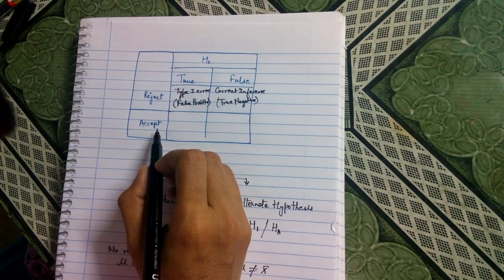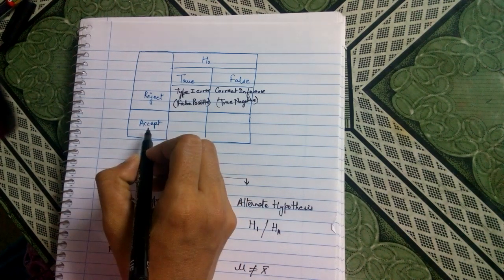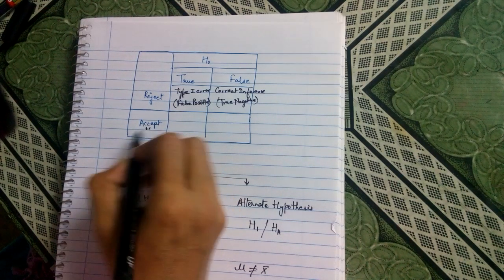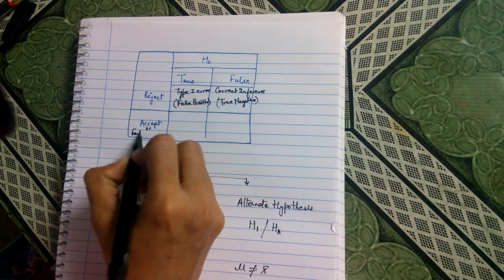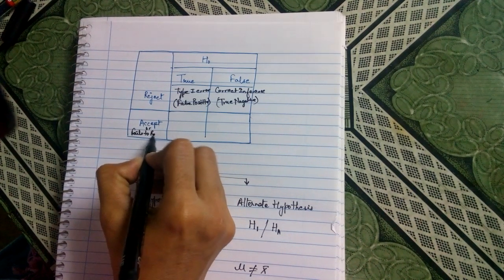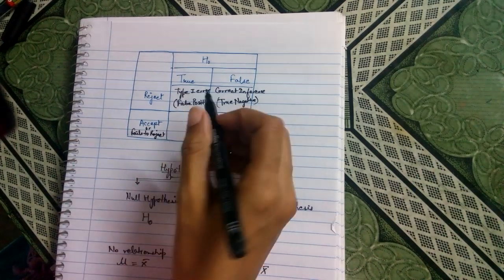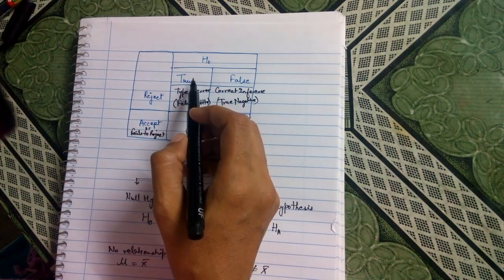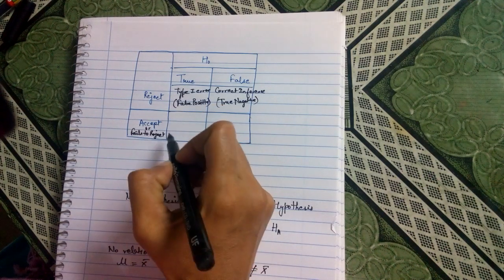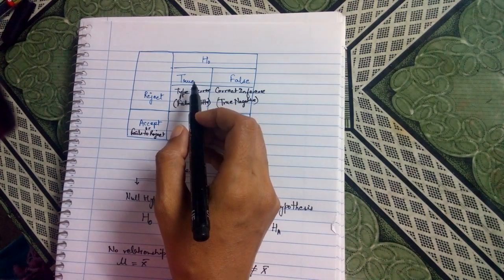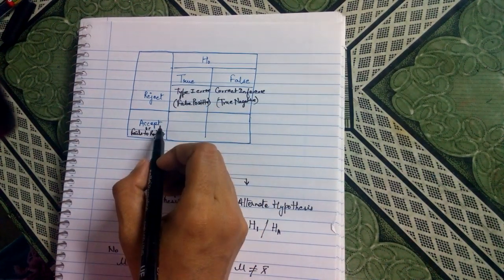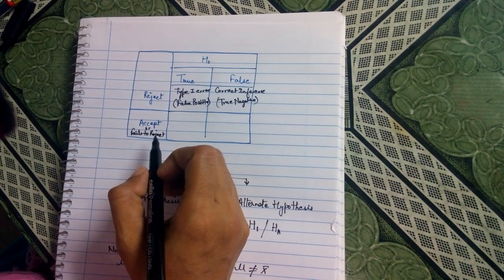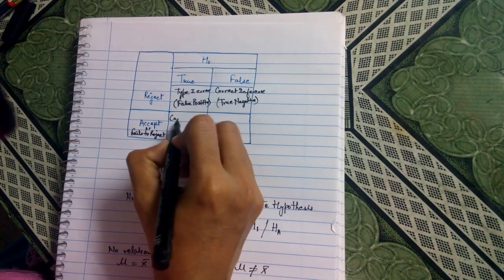Now if null hypothesis is true and we are accepting it — the other word used for accepting is 'fails to reject' — so accepting the null hypothesis when it is true, or failing to reject the null hypothesis when it is true, means we are not committing any error. So it is a correct inference.